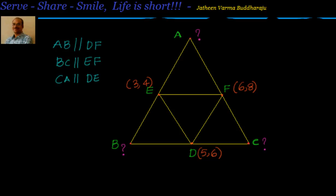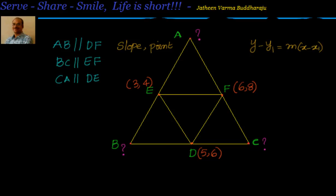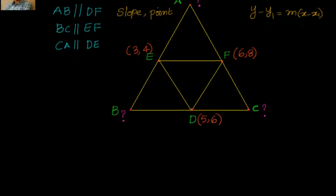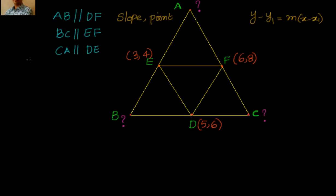Now, if two line segments are parallel, their slopes are equal. So if I know the slope of DF, that's the same as the slope of AB. I also know a point on AB because the midpoint lies on that line segment. So we know slope and point, and we can use the point-slope form: Y minus Y1 equals M times X minus X1. Step one will be to find the slopes of DE, EF, and DF.